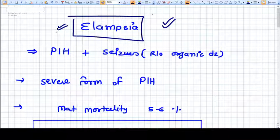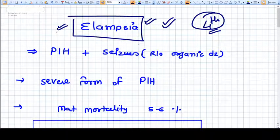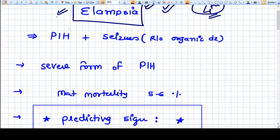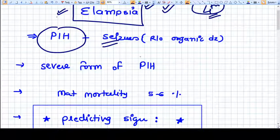Hey everyone, in this video we are going to talk about a short introduction of eclampsia. This is the fourth video in the series of PIH in pregnancy. The very basics: eclampsia is PIH plus seizures, and the reason for seizures should not be any organic disease.